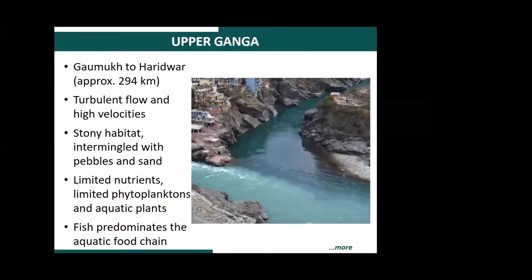From Gaumukh to Haridwar, if you concentrate on this photograph, you will see two rivers of clearly different colors. One of them is the Alaknanda river and the other is the Bhagirathi river, and Dev Prayag is their confluence. The Bhagirathi river originates at the Gaumukh glacier, while the Alaknanda has its origin near Badrinath — another important pilgrimage site. This is one of the first Panch Prayags, and from here the actual Ganga starts.